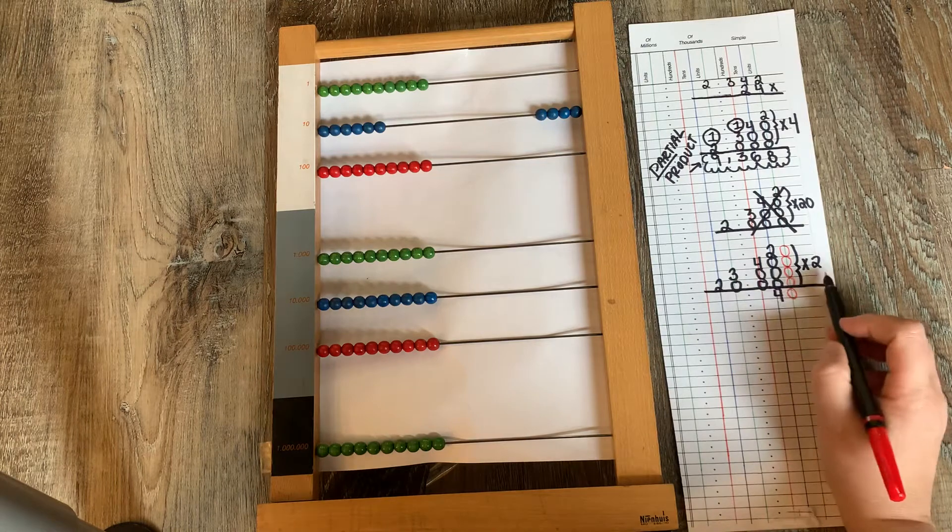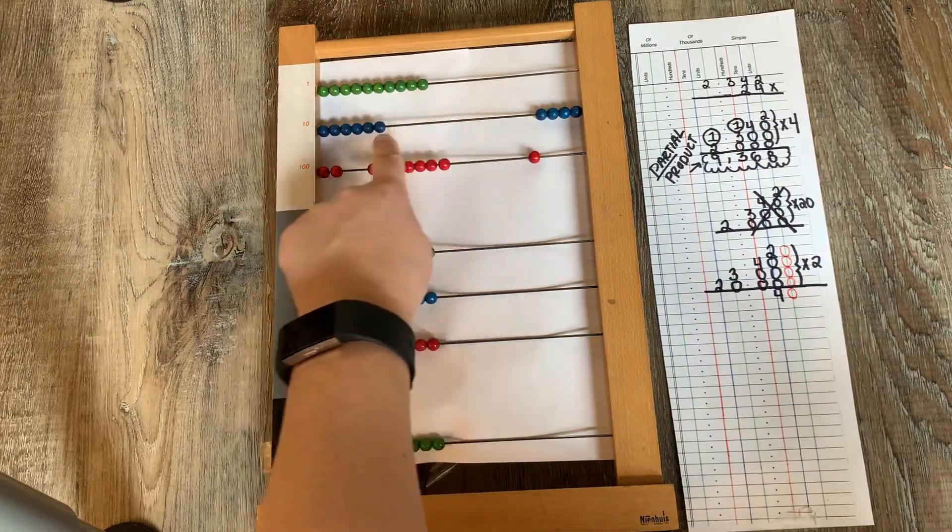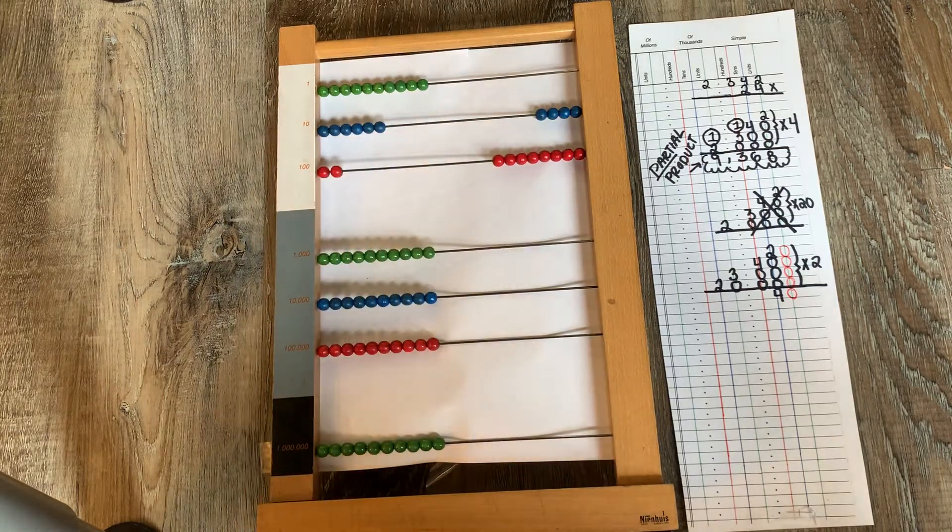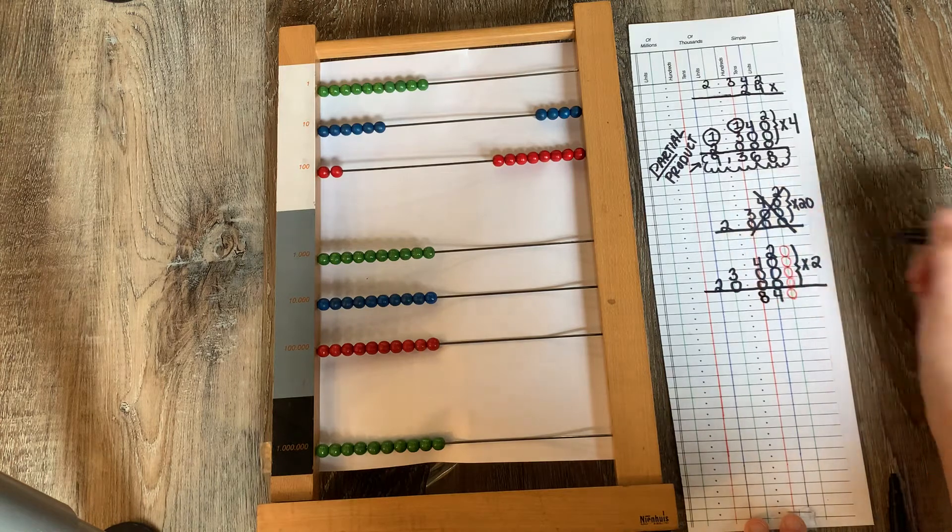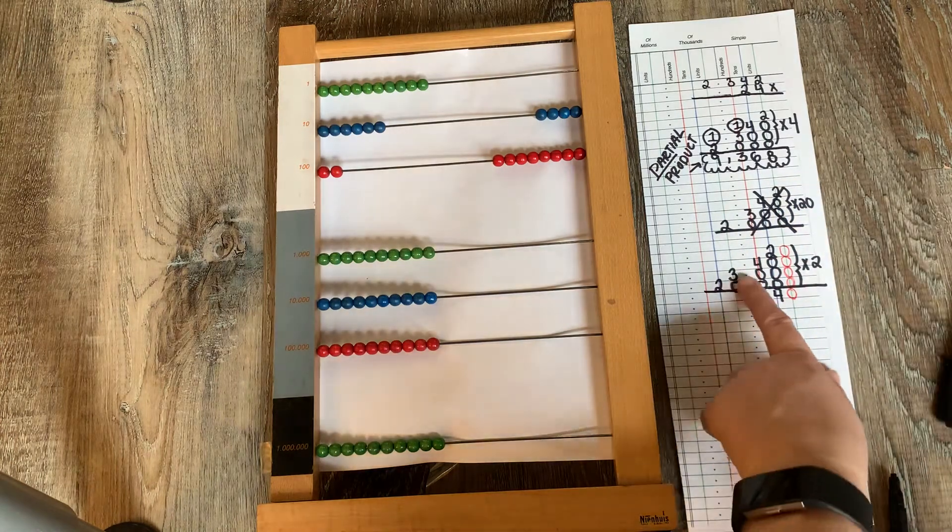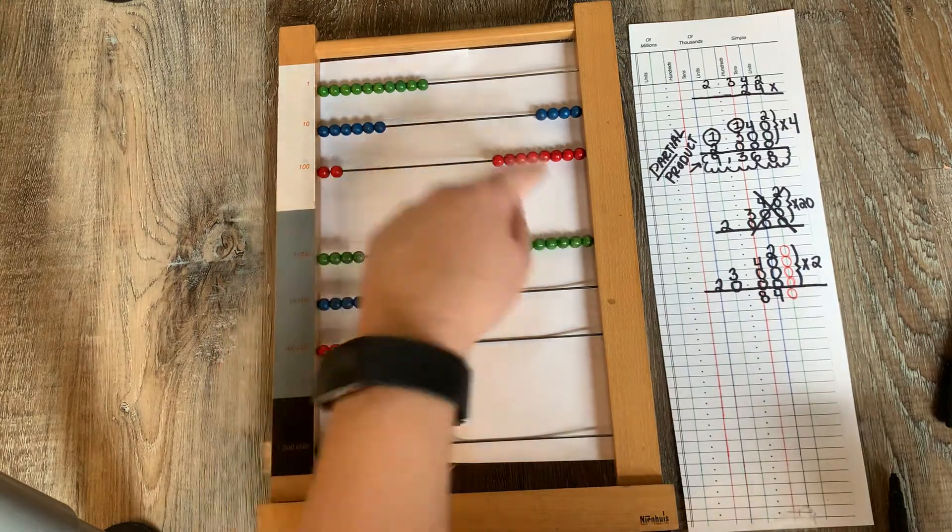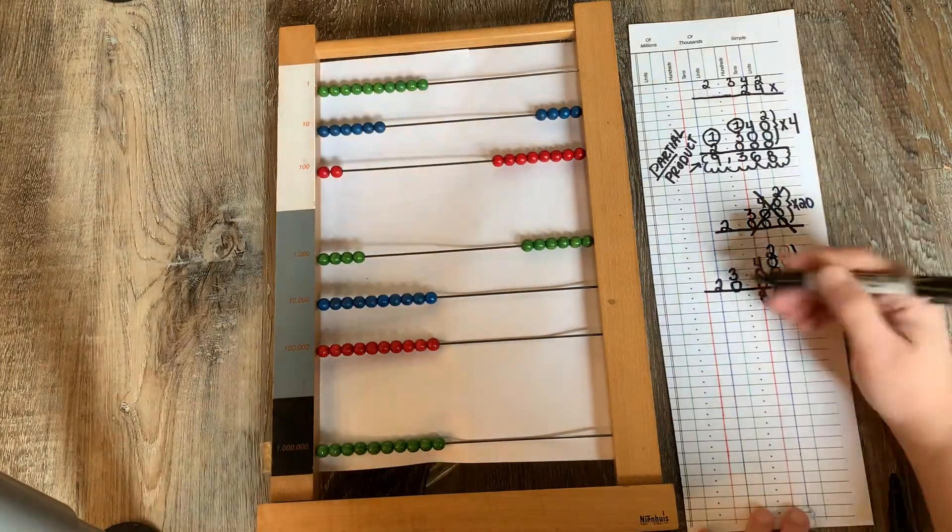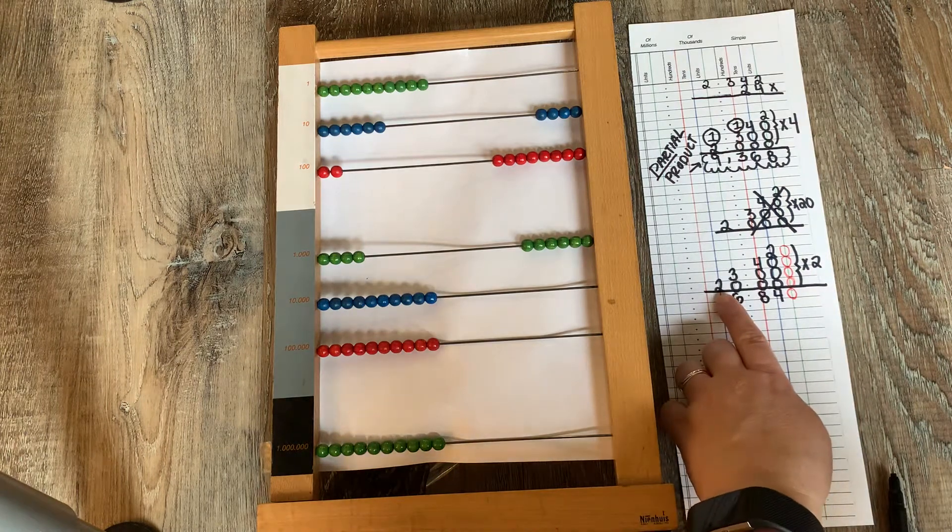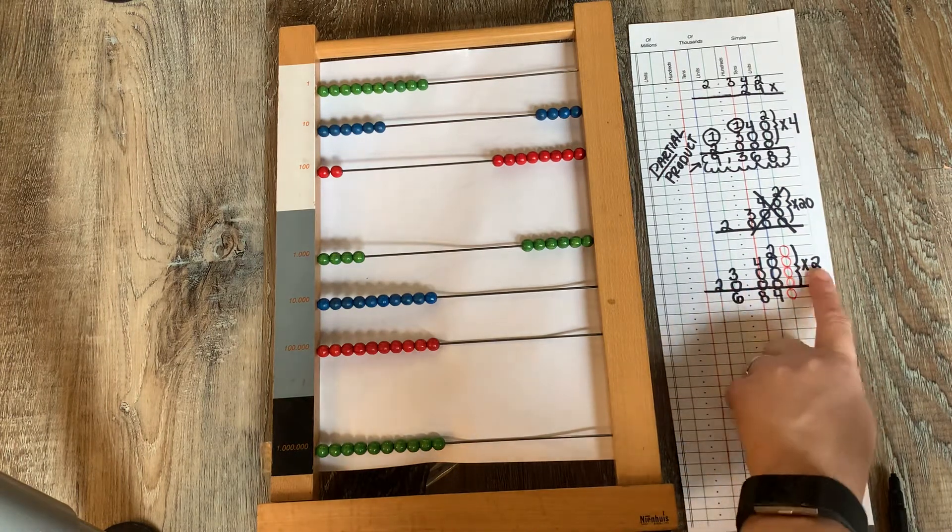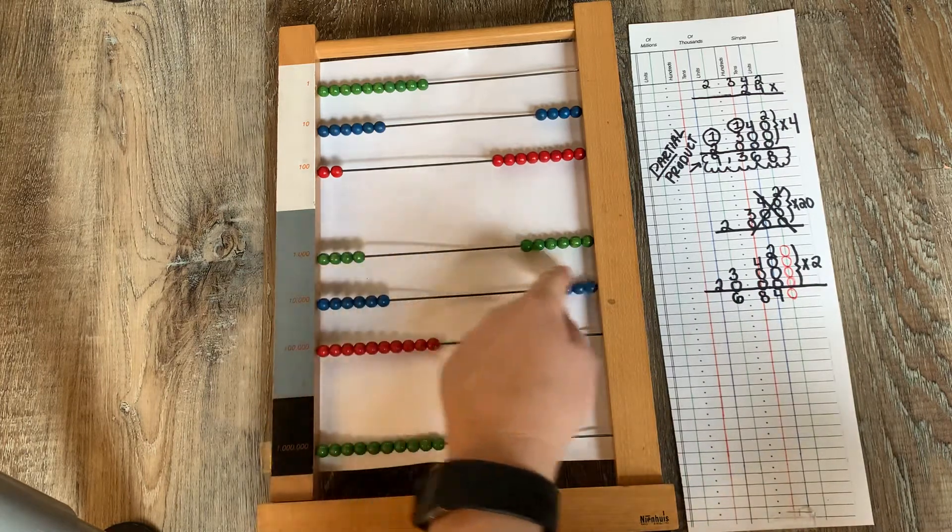Four hundreds taken two times. We know that's eight hundreds. So I'm going to put an eight here. And three thousands taken two times. Yep. Six. So I'd have six thousands. And two ten thousands or 20,000 taken two times gives us 40,000.